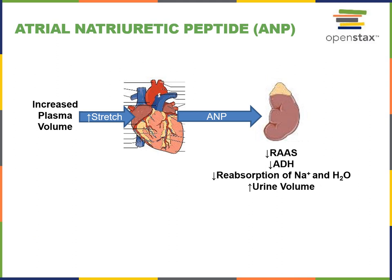Atrial natriuretic peptide also influences reabsorption of sodium and water. If we are very well hydrated and have a large plasma volume, this can cause stretching of the atrial chambers of the heart, leading to increased secretion of atrial natriuretic peptide. ANP will then inhibit the renin-angiotensin-aldosterone system and inhibit secretion of antidiuretic hormone, indirectly decreasing reabsorption of sodium and water, leading to an increase in urine volume and a decrease in urine concentration.